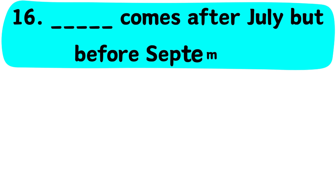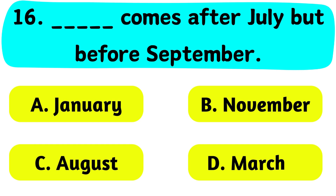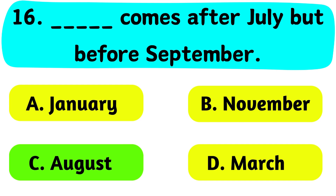Question No. 16. Dash comes after July but before September. A. January, B. November, C. August, D. March. The correct answer is Option C. August.